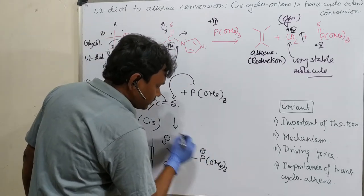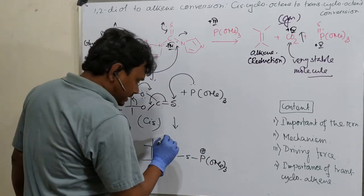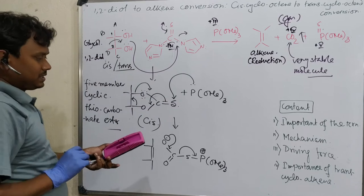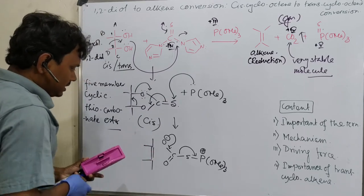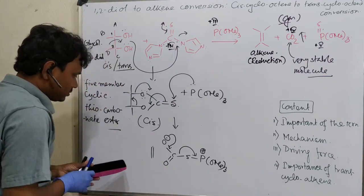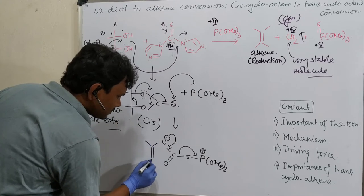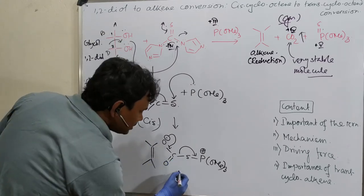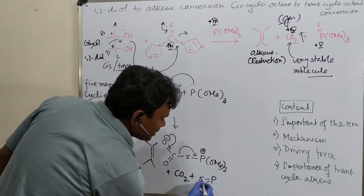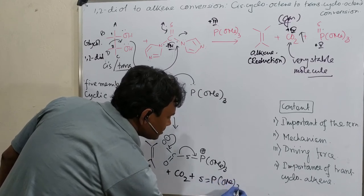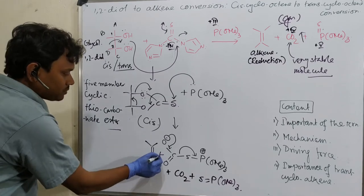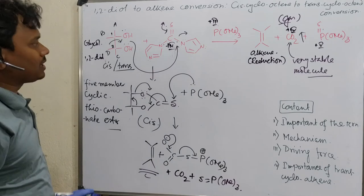The oxygen now has two bonds plus excess electrons, forming a negative charge, and there is a positive charge on phosphorus: carbon double bond O, O⁻, S–P(OMe)₃⁺. In the next step, this can push electrons and leave, producing the alkene. So the final products are: the alkene, CO₂, and P=S(OMe)₃. This is the overall mechanism for the diol-to-alkene conversion — the target product.